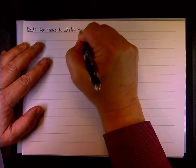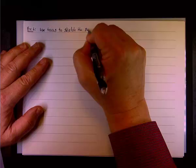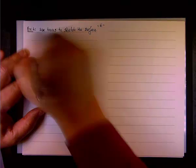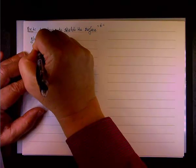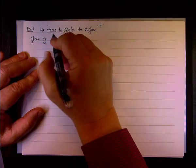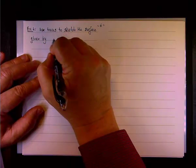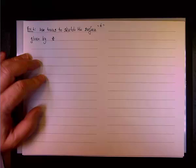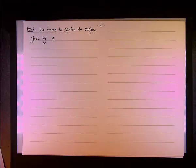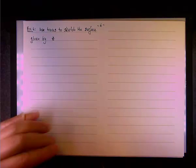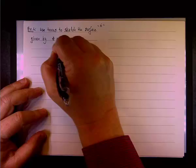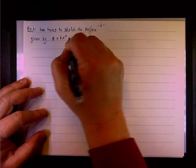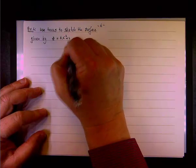So to sketch the surface given by the following, in this case we'll have something like this. Remember that second type of equation where you have just z not z squared? It's coming now. So you have z equals 4x squared plus y squared.